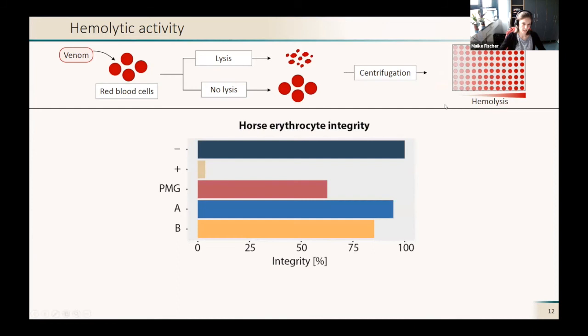Here you can see the horse erythrocyte integrity in percent. The negative control looked fine, and our positive control with the Triton X-100 completely lysed the cells. The effects are not as strong as in the other assays, but still we see an effect of the unfractionated PMG venom. We had almost 50% hemolysis, and both of our fractions slightly affected the erythrocyte integrity. In this case, fraction B had a stronger effect than fraction A, which is also quite interesting because in the other assays it was the other way around. So we can see that both fractions can lyse these erythrocytes.